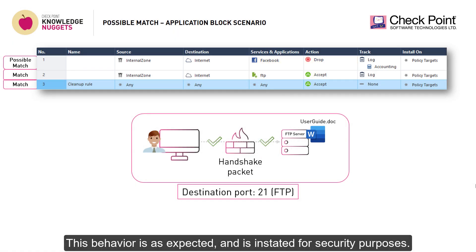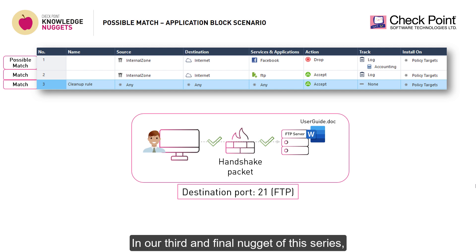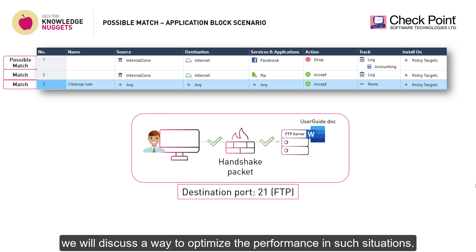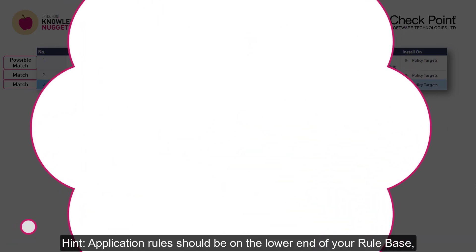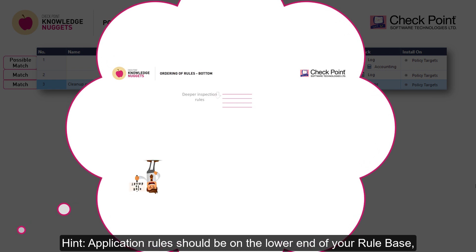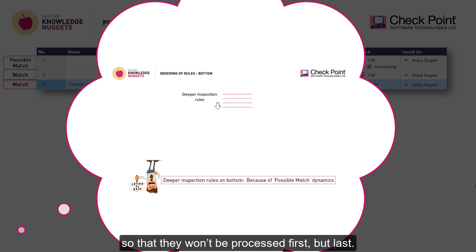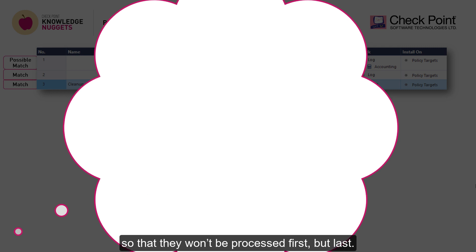This behavior is as expected and is instated for security purposes. In our third and final nugget of this series, we will discuss a way to optimize the performance in such situations. Hint: application rules should be on the lower end of your rule base, so that they won't be processed first, but last.